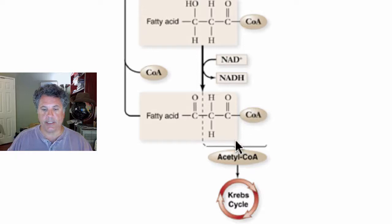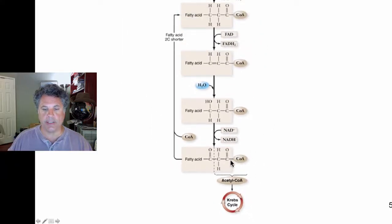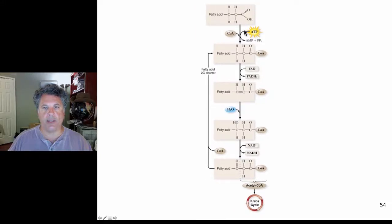When acetyl coenzyme A donates the two carbons to the Krebs cycle, we regenerate coenzyme A, and we now have a fatty acid which is two carbons shorter than before. We can repeat this process cyclically until the fatty acid is completely broken down, removing two carbons at a time as acetyl groups attached to coenzyme A that will then enter the Krebs cycle.